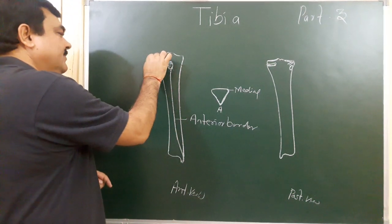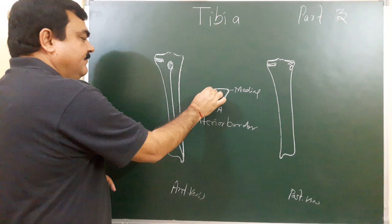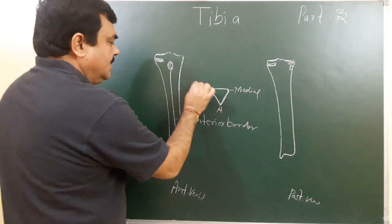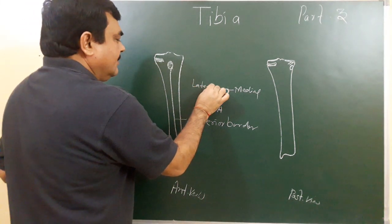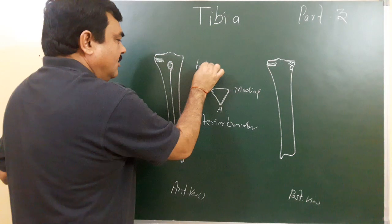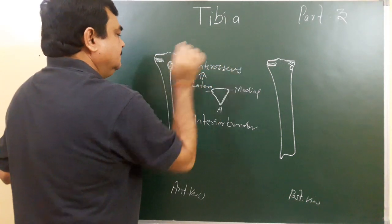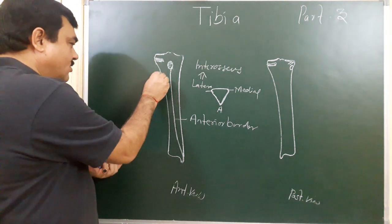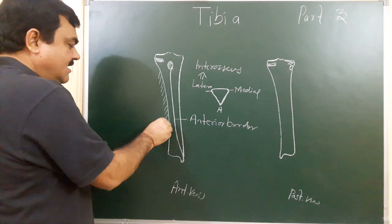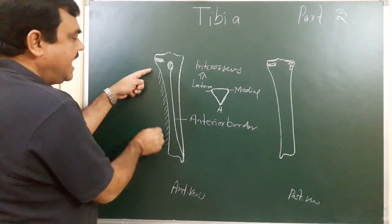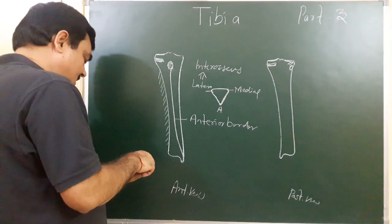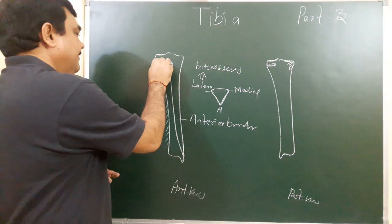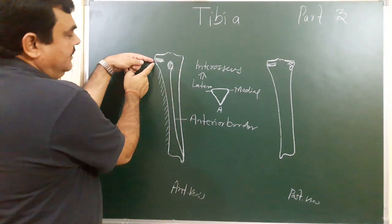And the lateral border — this is the lateral border — is also written as the interosseous border, because the interosseous membrane is attached to this border. Here the fibula lies and it attaches with the fibula. So this border is the interosseous border. It extends from the lateral condyle.